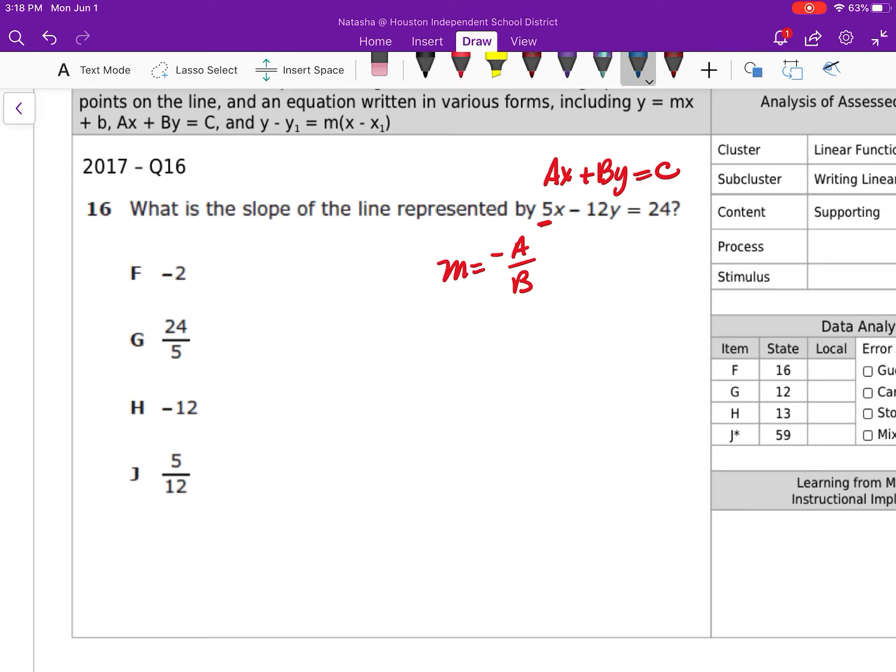Or you can go ahead and convert this to slope intercept form. I'm going to show you on this one, I'm just going ahead and keeping it in this form. So this is going to be m equals negative a, which is 5, over negative 12. So that's going to eliminate - negative divided by negative becomes a positive. That does not simplify further because 5 is a prime number, so that gives me my answer choice J.